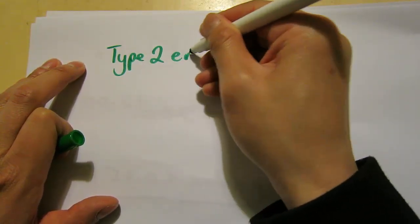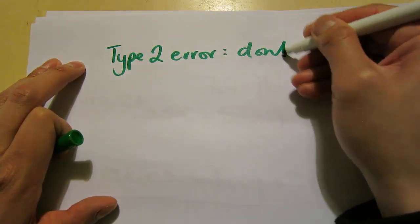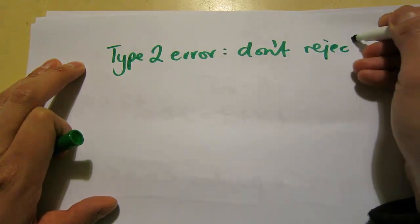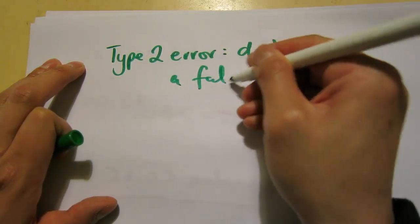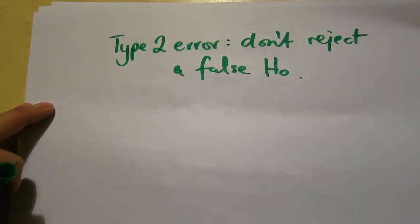And remember, probability of a type 2 error is when we don't reject a false null hypothesis. So there are two ways we can increase the power of a test.